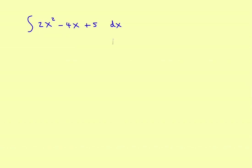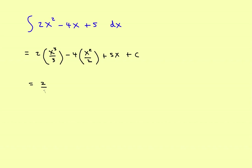Now if you have a polynomial, you can break it down into individual parts. For the antiderivative of 2x squared minus 4x plus 5: the antiderivative of x squared is x cubed over 3, multiplied by the constant 2; the antiderivative of x is x squared over 2, multiplied by the constant 4; and the antiderivative of the constant 5 is 5x. The final answer is two-thirds x cubed minus 2x squared plus 5x plus C.